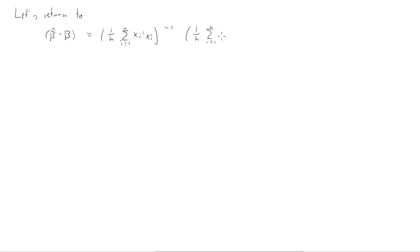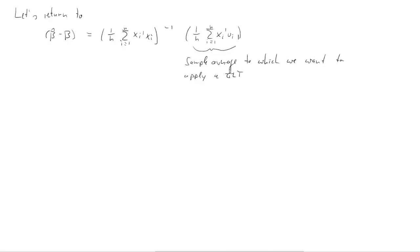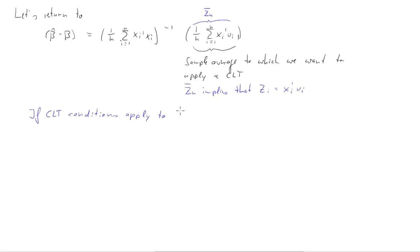With this in the bag, we return to our example. The difference between beta_hat and beta is the product of two terms you should be familiar with. The last term is just a sample average, and we want to apply a central limit theorem to it. We call that our z-bar_n, our sample average of interest. If that is z-bar_n, that implies our random variable z_i is x_i' times u_i — this is a vector, but that causes no problem for central limit theorems.